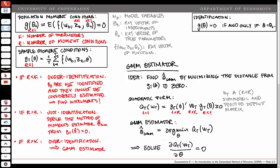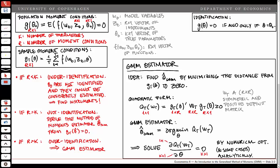Note that the quadratic form is a scalar term and we differentiate with respect to a k by 1 dimensional vector, giving us k by 1 first-order conditions. In general we use numerical optimization, though in some cases an analytical solution can be found. Thanks for watching.